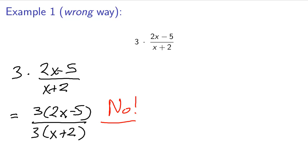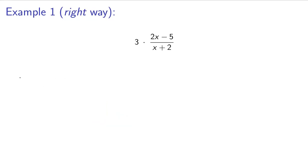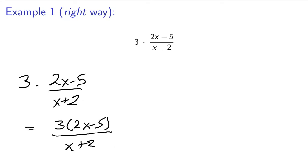So let's go ahead and go on to the right way. So we have 3 times 2x minus 5 over x plus 2. This 3 does not go to both the top and the bottom. It only goes to the top. So it would be 3 times 2x minus 5 over x plus 2.